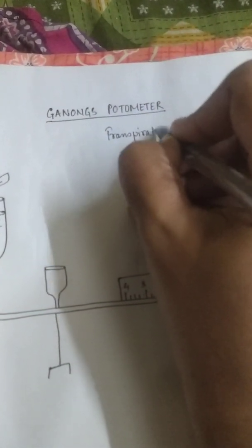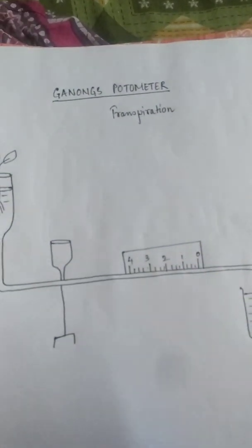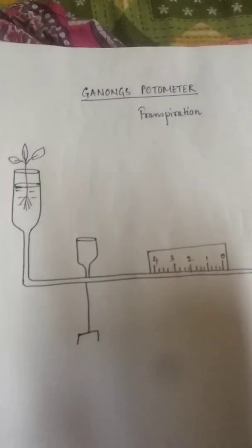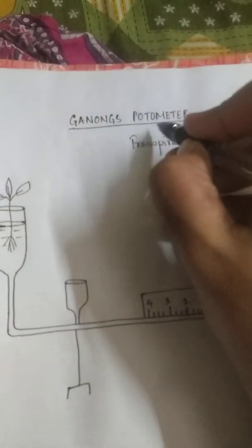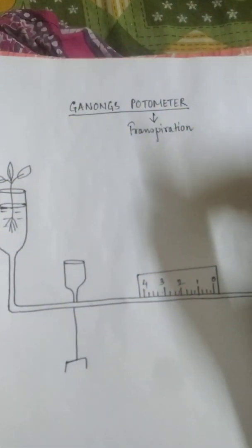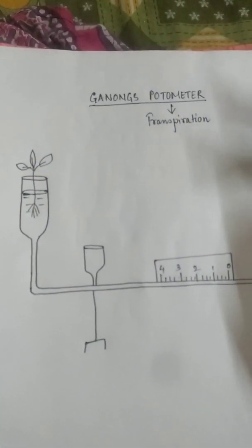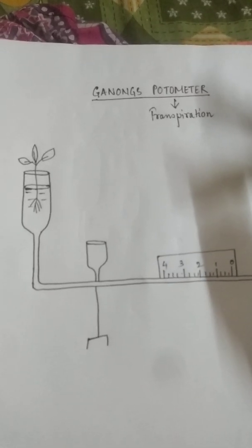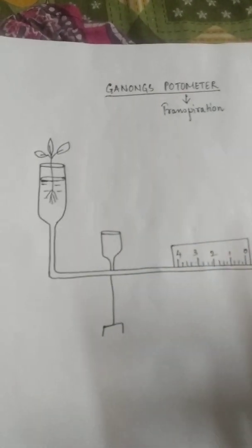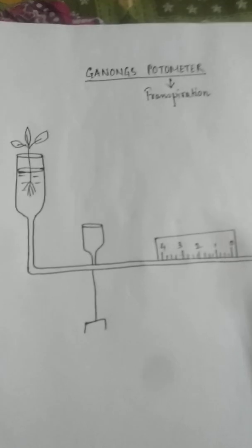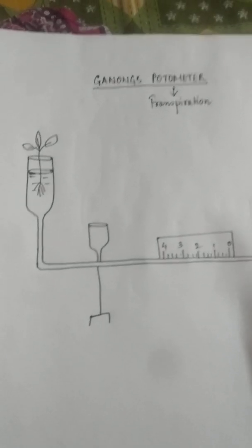And to measure the rate of transpiration or the speed of transpiration for a particular plant we have an instrument which is called potometer. This potometer is designed in such a way that it can calculate the rate of transpiration.